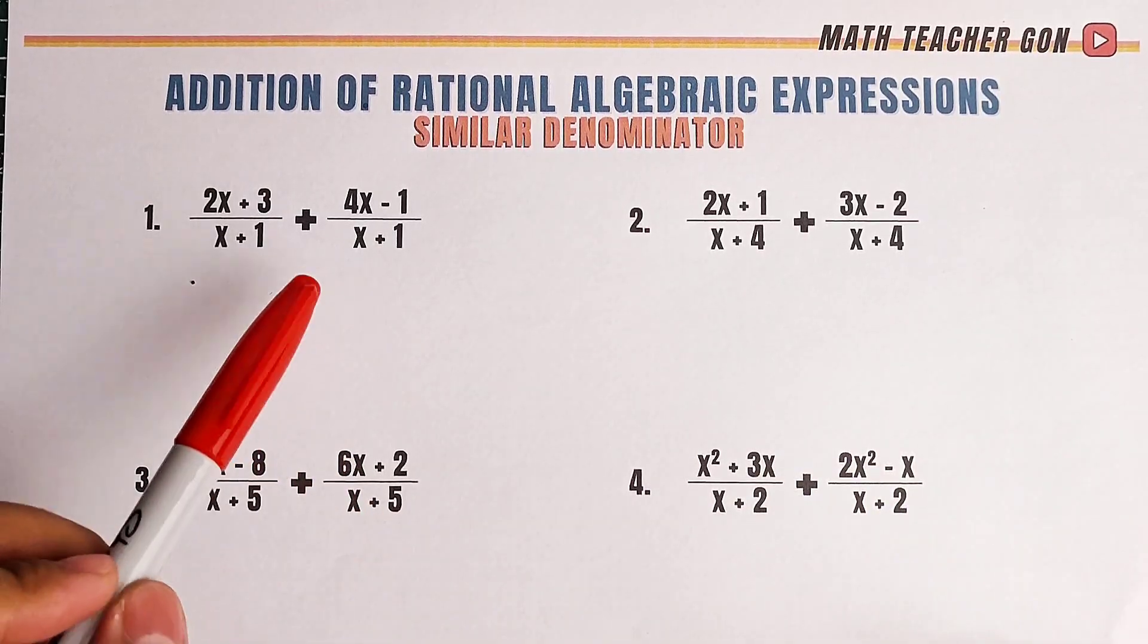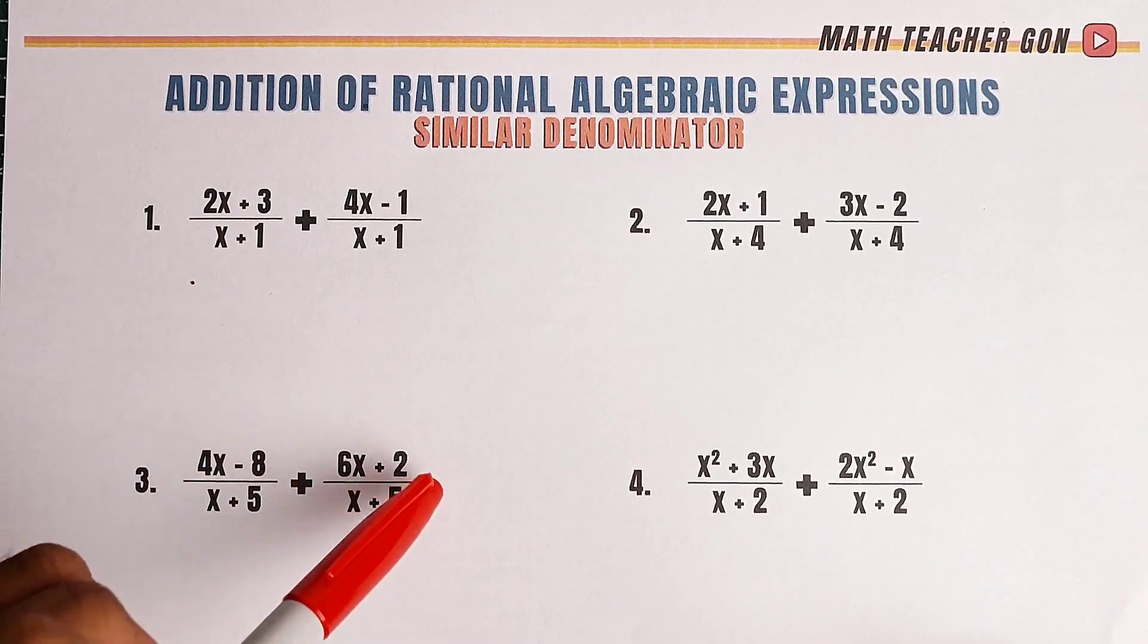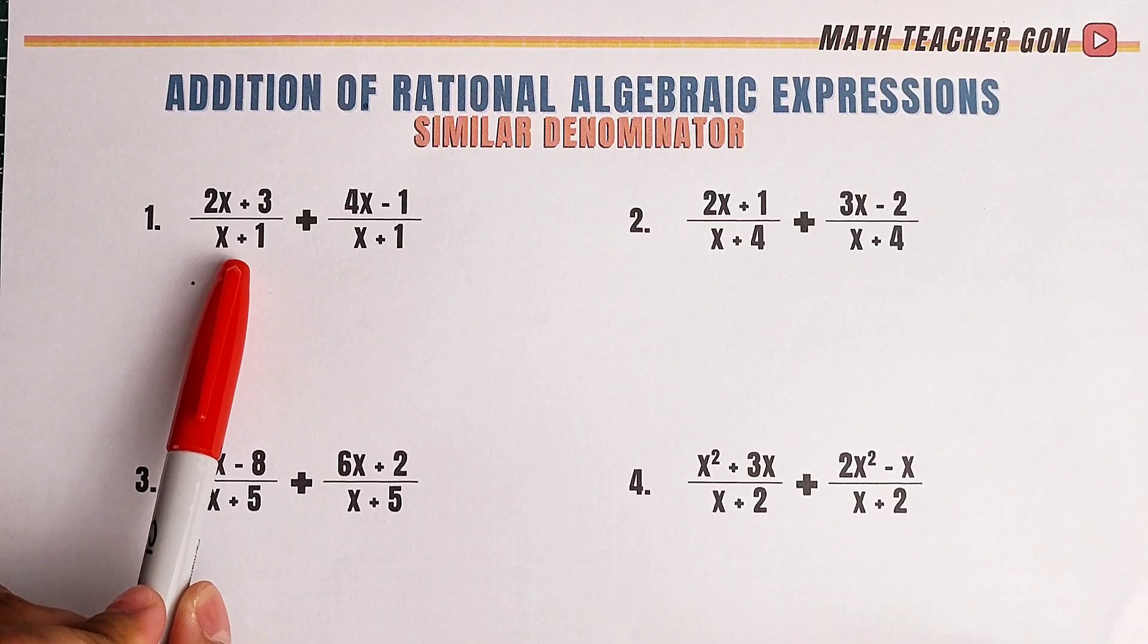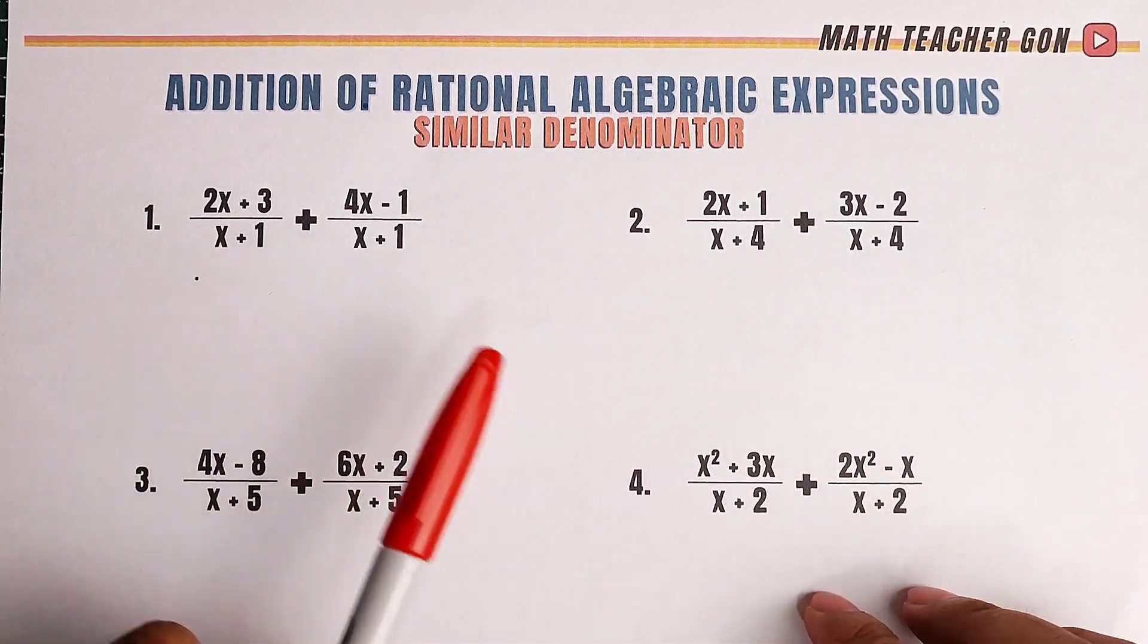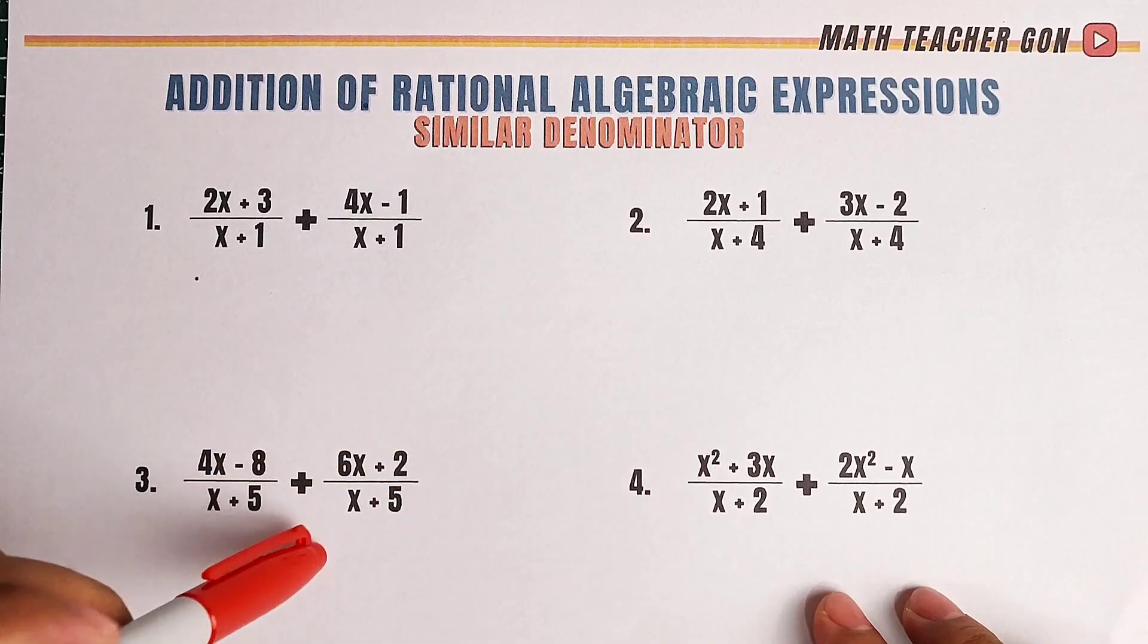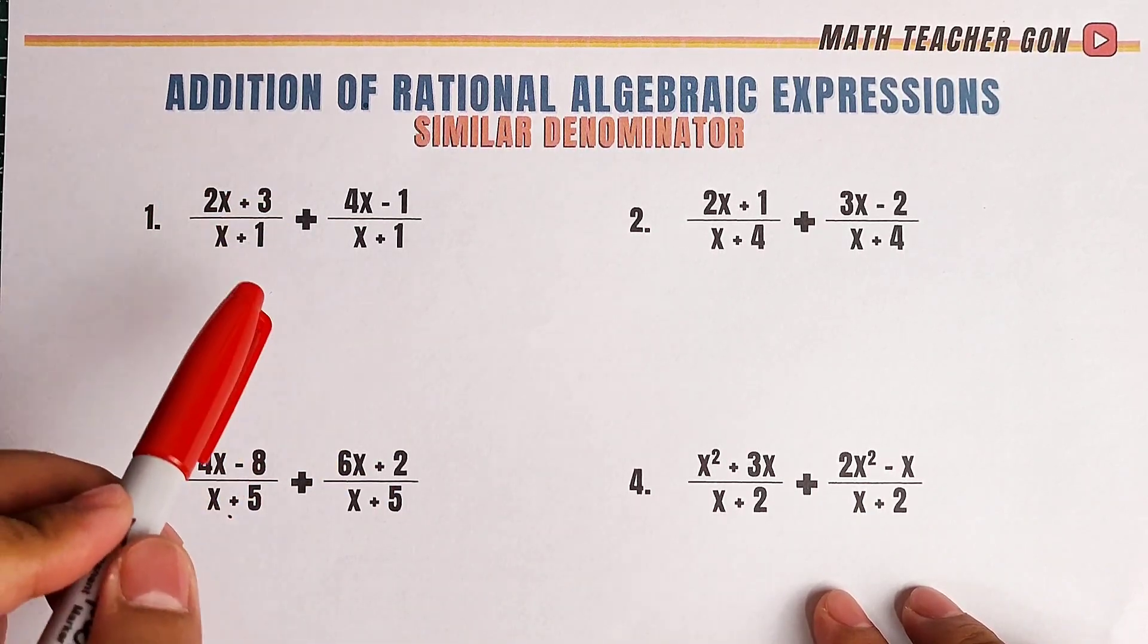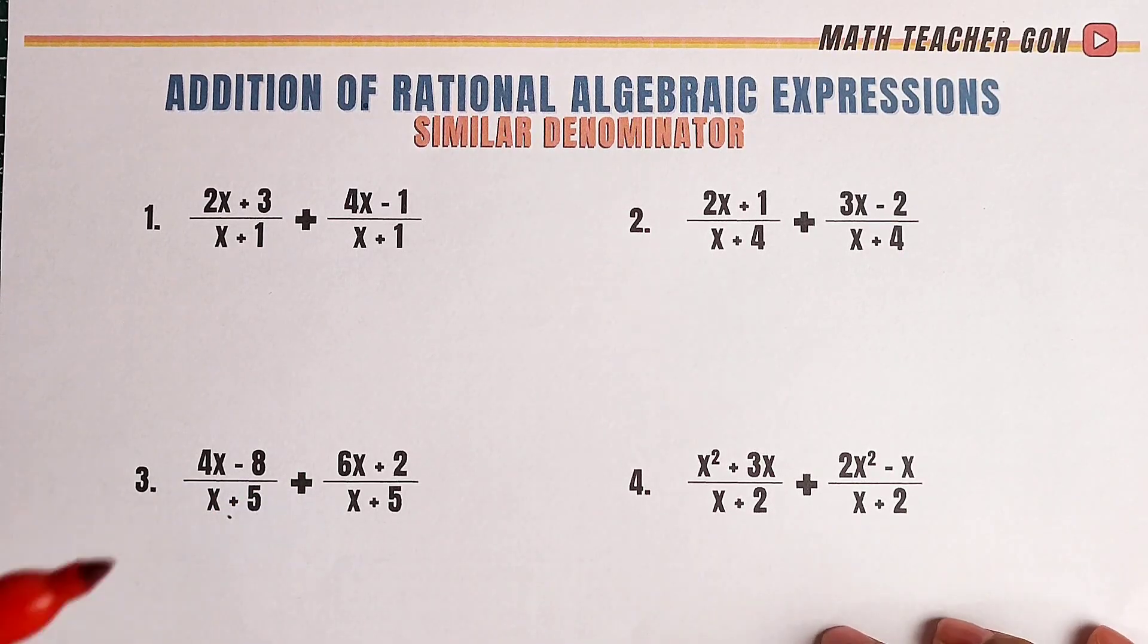In adding similar denominators of rational algebra expressions, as you can see here, we have the denominators as x plus 1, and here, x plus 1, and same with the other given expression. Adding rational algebra expressions with similar denominator is the same as adding fractions. Let me show you how to do that in fraction first.